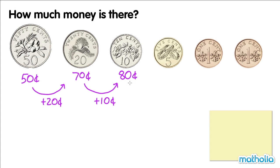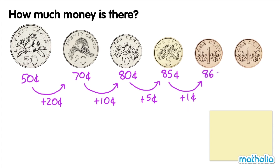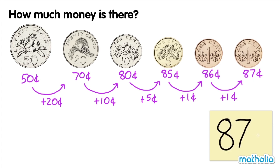80 cents plus 5 cents is 85 cents. 85 cents plus 1 cent is 86 cents. 86 cents plus 1 cent is 87 cents. There is 87 cents.